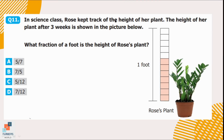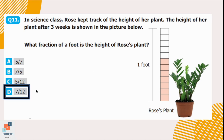Question number 11. In science class, Rose kept track of the height of her plant. The height after three weeks is shown in the picture. Which fraction of a foot is the height of Rose's plant? To find the fraction, we count the colored parts: 1, 2, 3, 4, 5, 6, 7. So the numerator is 7, represented in options B and D, meaning options A and C are incorrect. Now for the denominator, we count the total number of parts continuing from 7: 8, 9, 10, 11, 12. So 12 is the denominator. The fraction is 7/12, which is option D.